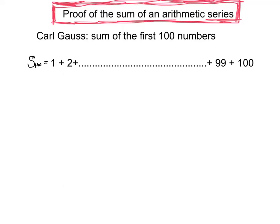We're going to look at the proof of the sum of an arithmetic series. We're going to start by looking at a real example of adding up the first 100 numbers, as reputedly attributed to Carl Gauss, a 19th century mathematician.